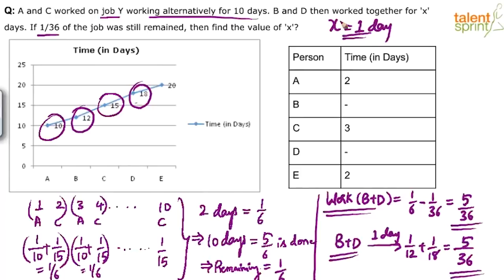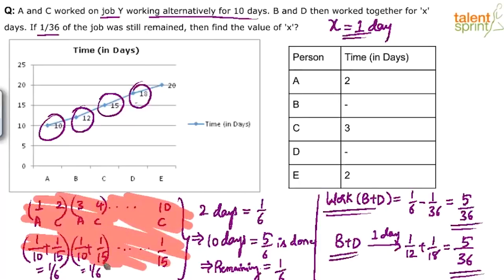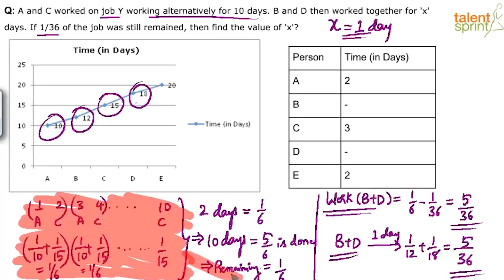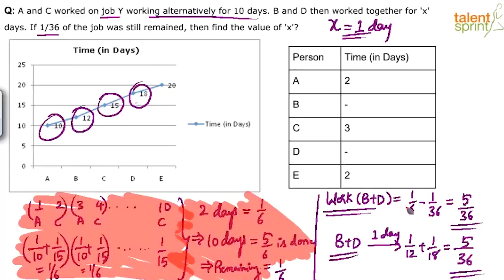Do not go by the length of the solution — a lot of these intermediate steps are just for your understanding and should not be written on paper. Within no time you should figure out that in two days they can finish 1/10 plus 1/15 = 1/6, so in 10 days they finish 5/6 — these are mental calculations. Then 1/6 is remaining; B and D do 1/6 minus 1/36 = 5/36. That can also be done mentally. There's hardly any paperwork.